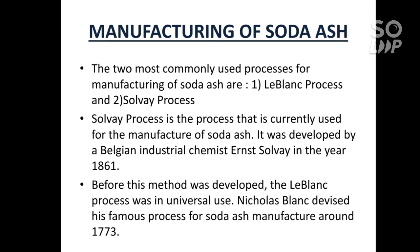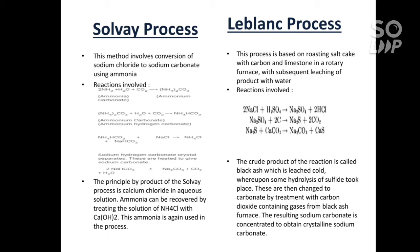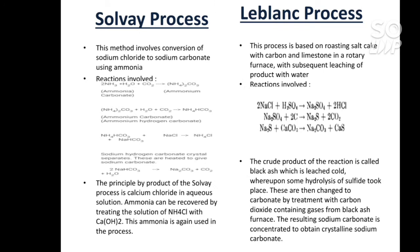Before the Solvay method was developed, the Leblanc process was in universal use. Nicholas Leblanc devised a famous process for soda ash manufacturing around 1773. The Solvay method involves conversion of sodium chloride to sodium carbonate using ammonia. The principal by-product of the Solvay process is calcium chloride in aqueous solution. Ammonia can be recovered by treating the solution of NH₄Cl with Ca(OH)₂, and this ammonia is again used in the process.